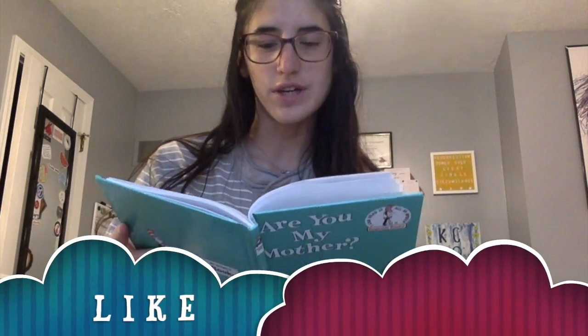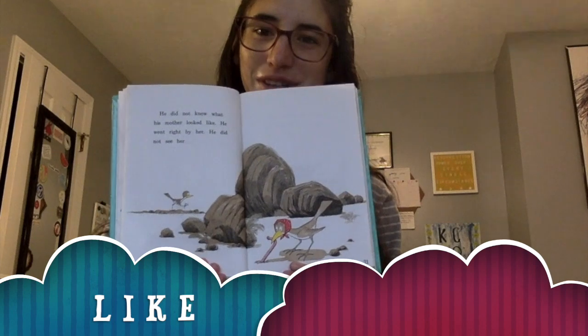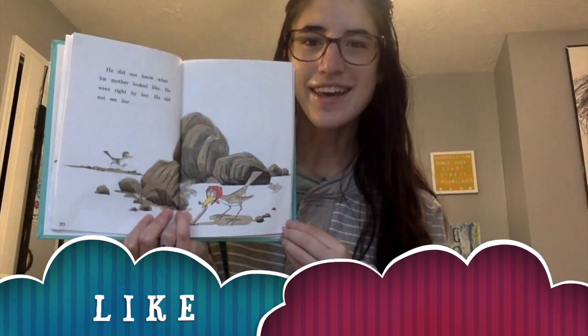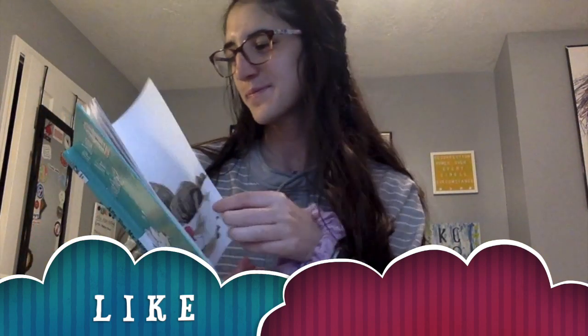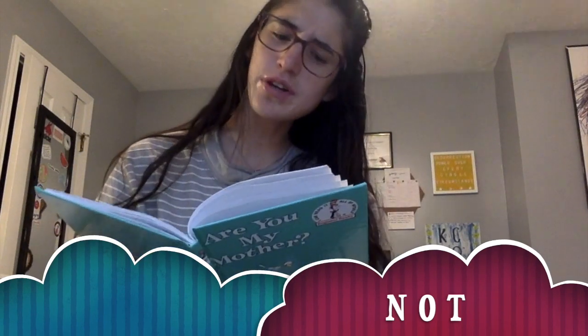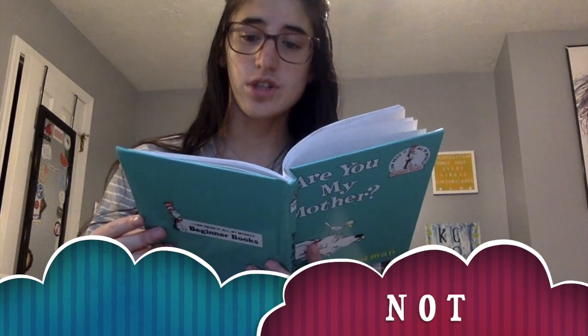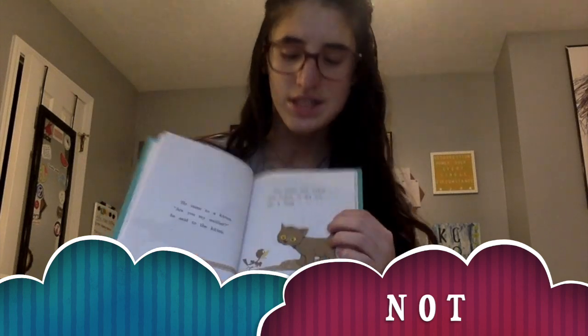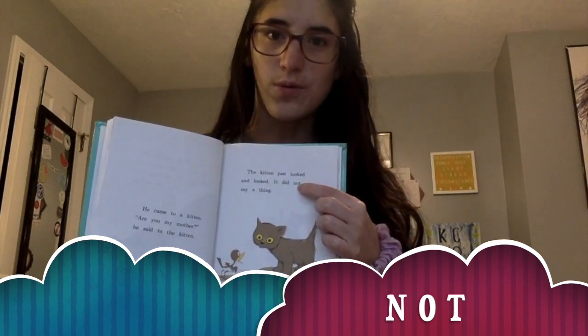He did not know what his mother looked like. He went right by her. He did not see her. That silly bird — he walked right past his mom! This sight word is like — L-I-K-E. He came to a kitten. Are you my mother? He said to the kitten. The kitten just looked and looked. It did not say a thing. This sight word is not — N-O-T.